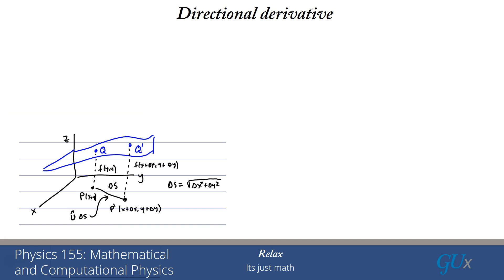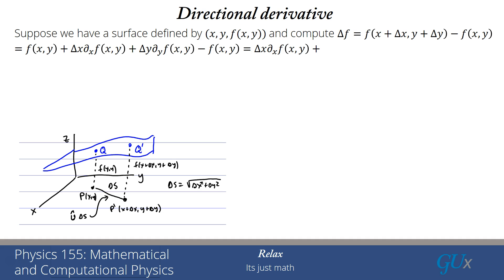There are two other things I want to talk about. The first is the directional derivative. So suppose we have a surface defined by x, y, f of x, y. So that's saying z is equal to f of x, y. And I want to compute the difference of that function between x, y and two shifted points, x plus delta x and y plus delta y. So I'm going to compute delta f is f of x plus delta x, y plus delta y minus f of x, y. If I use the Taylor series expansion and just keep the lowest order terms, f of x plus delta x, y plus delta y is equal to f of x, y plus delta x times the derivative in the x direction of f of x, y plus delta y times the derivative in the y direction of f of x, y minus f of x, y. And that means that the f of x, y terms cancel and I'm left just with the derivative terms.